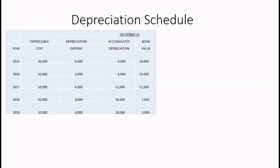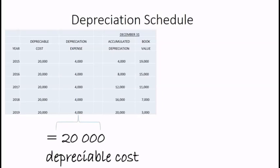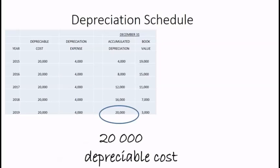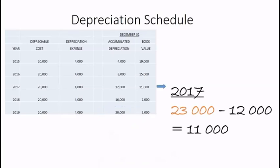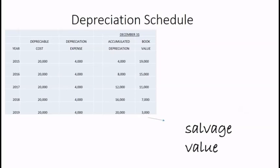Before I end the video, let me just point out a few things. If we were to add up all the depreciation expense throughout the years, we come up with $20,000 — our depreciable cost. Our ending accumulated depreciation amount is also $20,000, our depreciable cost. At any given time, we should be able to deduct the accumulated depreciation from the cost to come up with the book value. And our ending book value is our salvage value: $3,000.